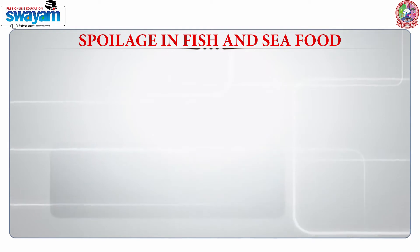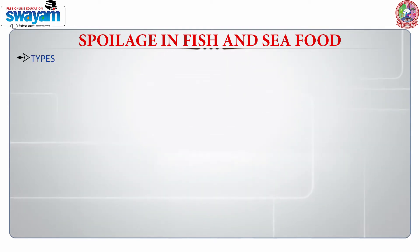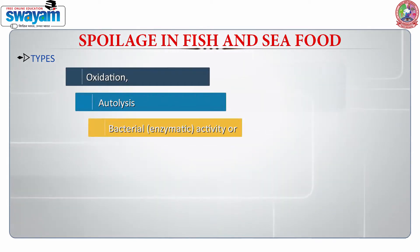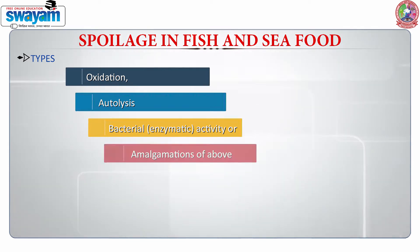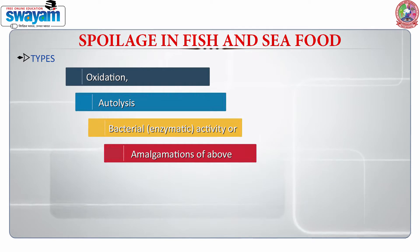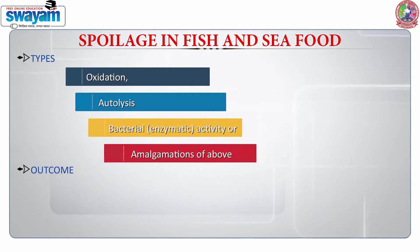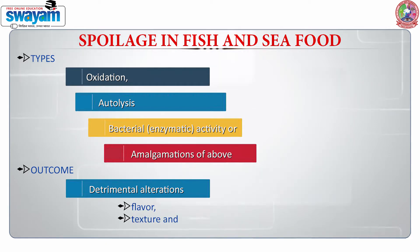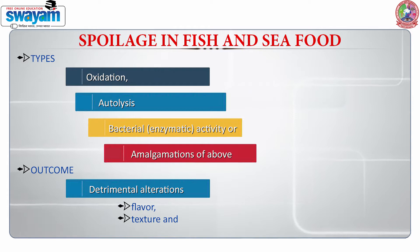Now coming to the spoilage in fish and seafood. There are various types of spoilage which can take place — it can be oxidation, autolysis, bacterial enzymatic activity, or it is a combination of the above three defects. The outcome is detrimental: it spoils the flavour, the texture and brings about the production of odours.